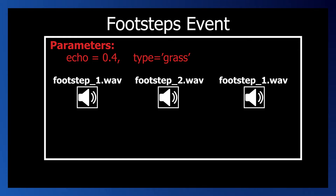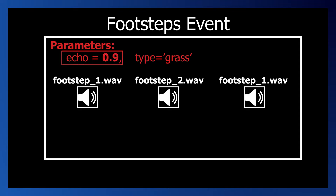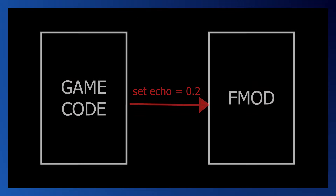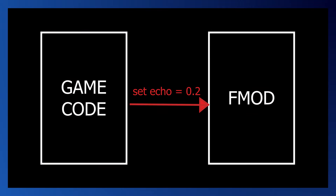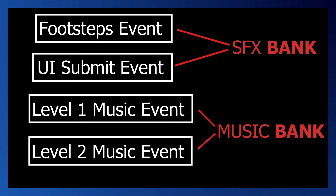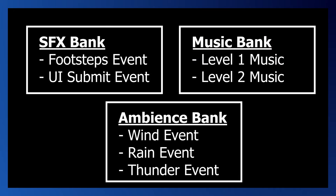For the footsteps example, we could add a parameter called echo as a value between zero and one. Then we can change that parameter where the closer we get to one, the more the footstep sound will echo when we play the event. The benefit here is that we can control the value of any parameter from the game code so we can properly adapt that echo parameter to be higher or lower depending on where the player is in the game. Each event is assigned to something called a bank, which I'll cover in more detail later in this video, but for now just think of a bank as a collection of a bunch of events of some similar type.